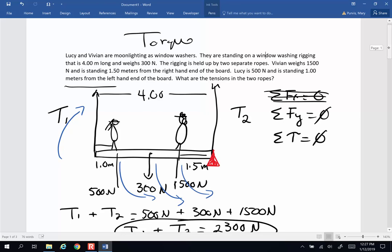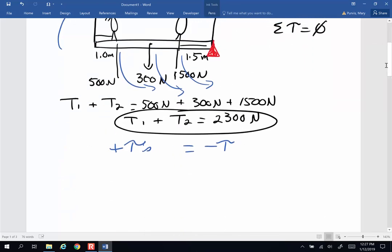So let's go ahead and make some equations here. My positive torques are going to be these down below. If the entire rig is four meters across, I'm going to start with Lucy's weight, 500 newtons. How far is she from the pivot? Well, if it's four meters and she's one meter in, her lever arm is three meters, plus the weight of the rigging, 300 newtons. That's going to be at the center of gravity of this four meter board, so that's two meters from the end which I chose as my fulcrum, plus the weight of Vivian, my 1500 newtons. And we're told she is 1.5 from that end.